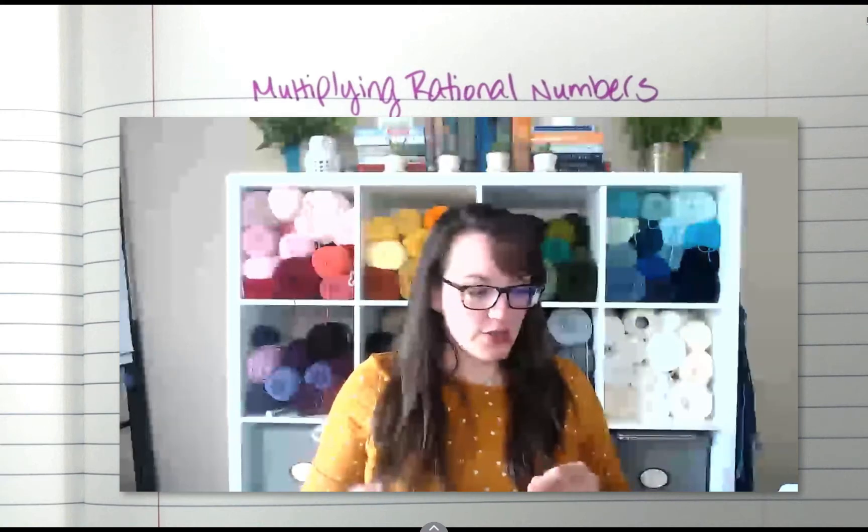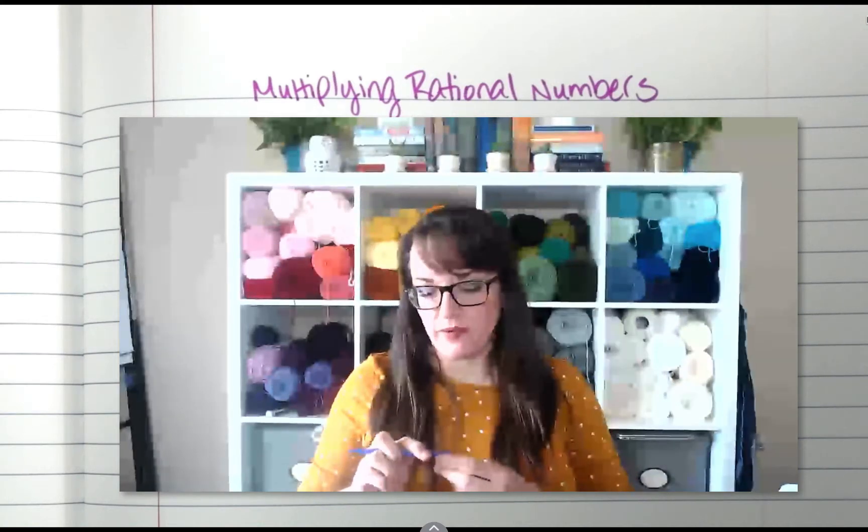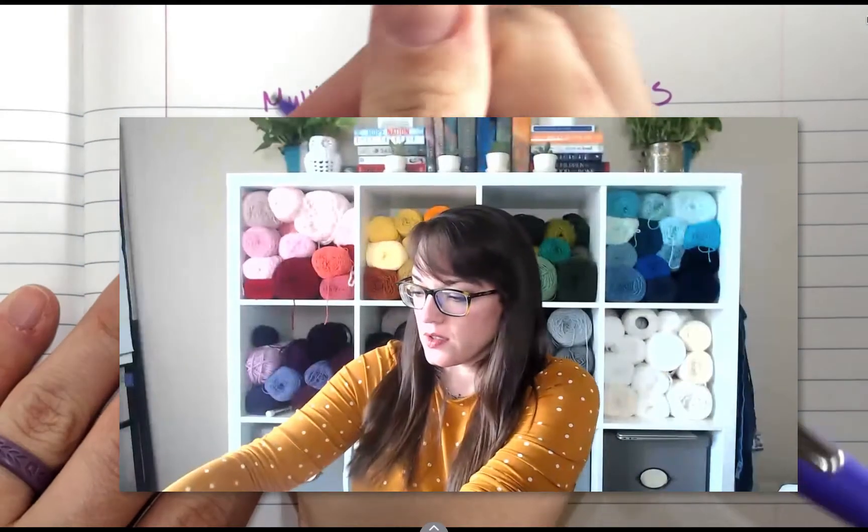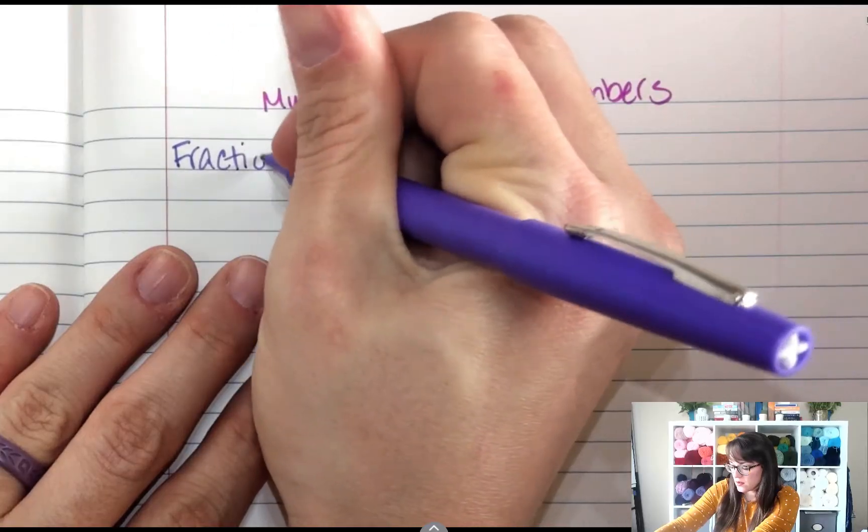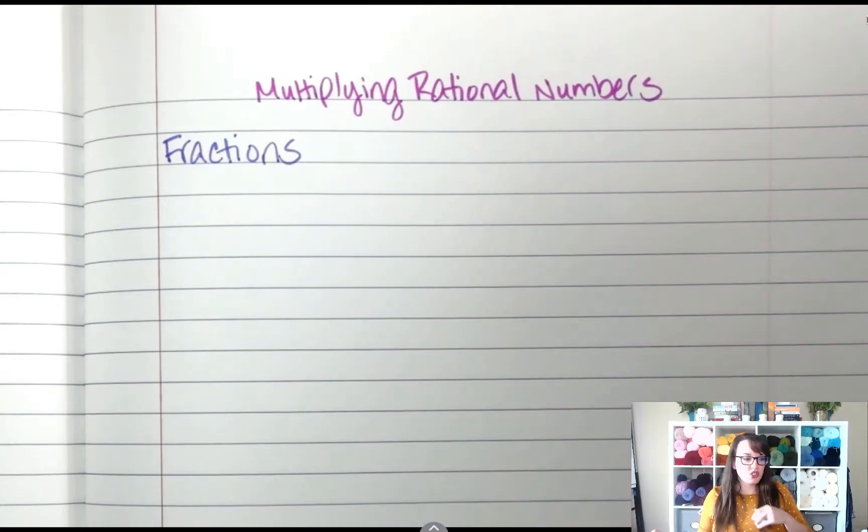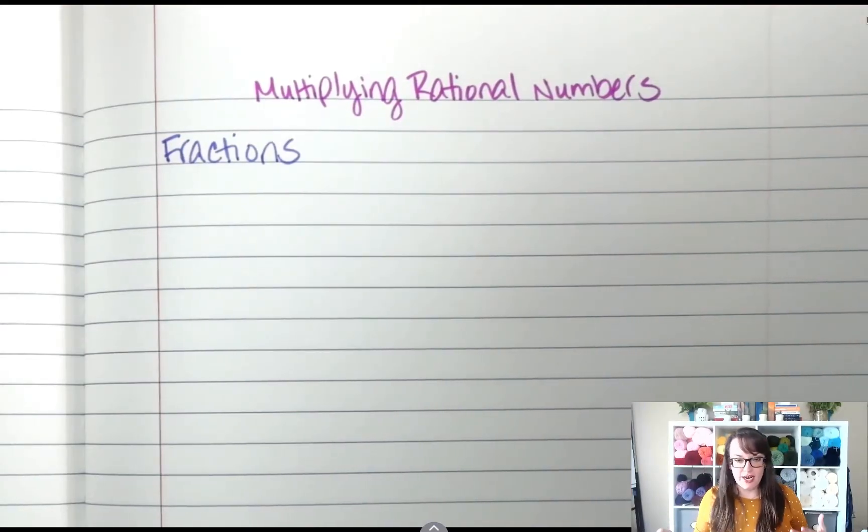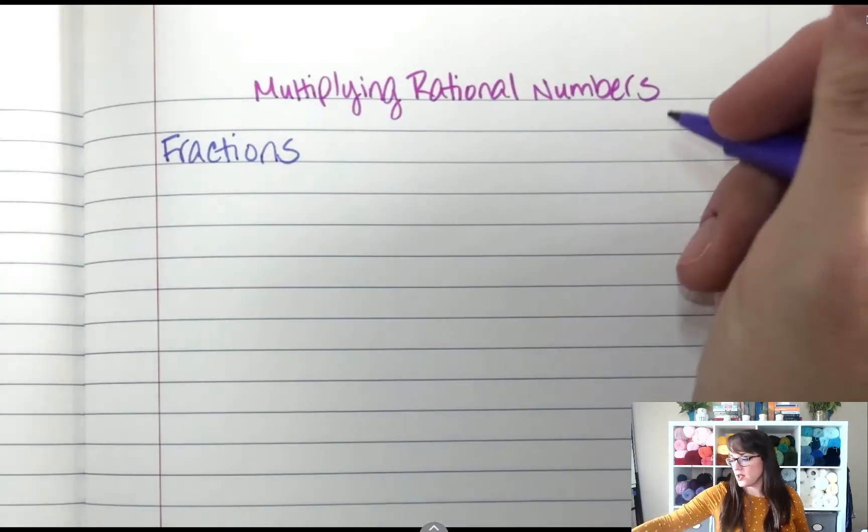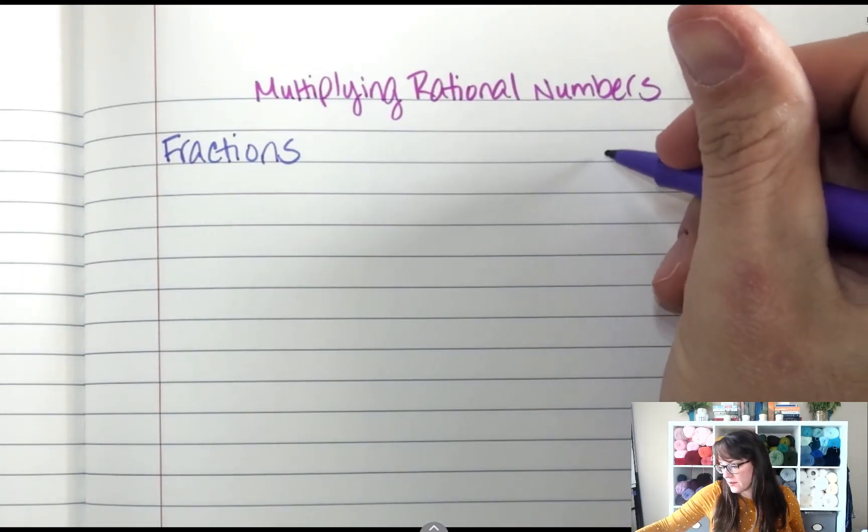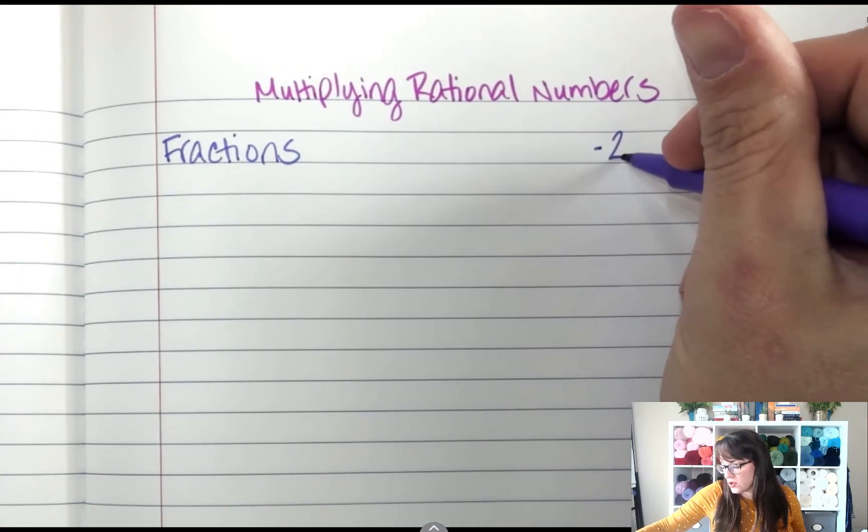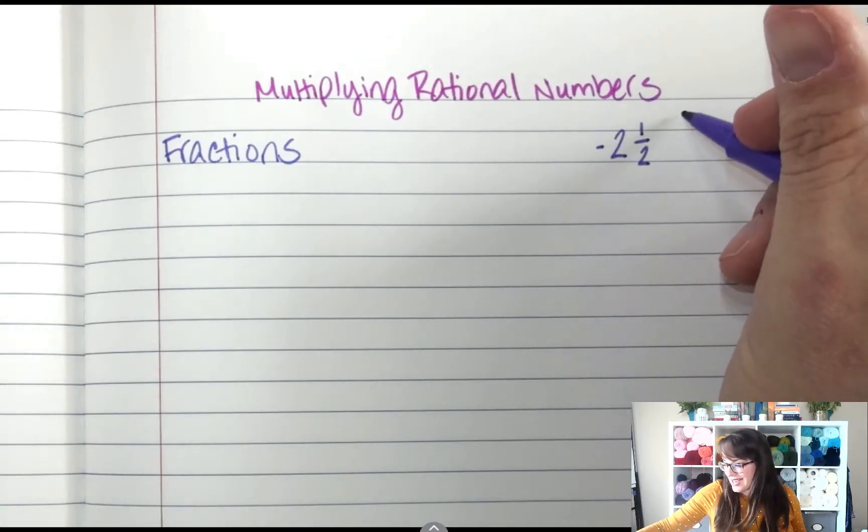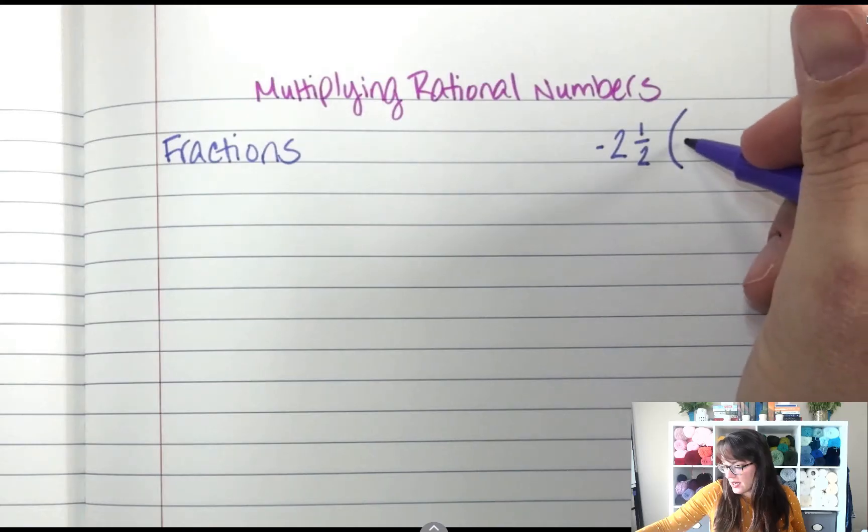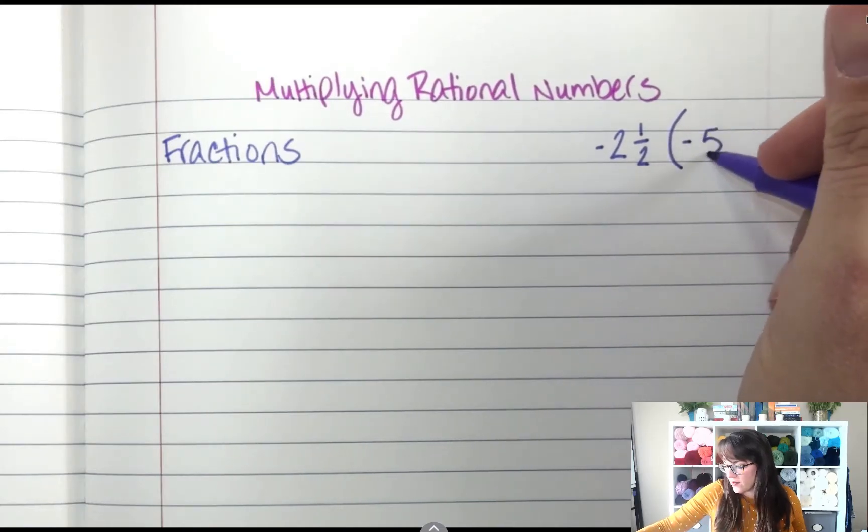The first one we're going to tackle is we're going to jump right in with fractions first. So we're going to start with our fractions. So how do we multiply fractions? We're going to start with looking at this example. We're going to say negative 2 and 1 half times negative 5.